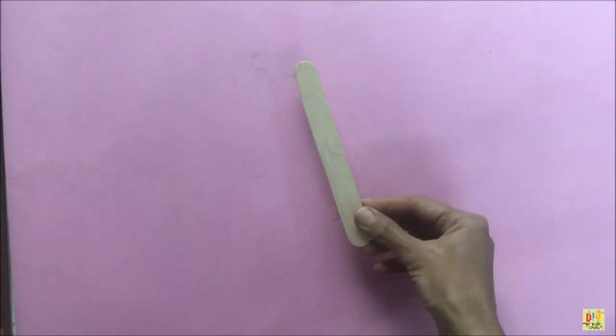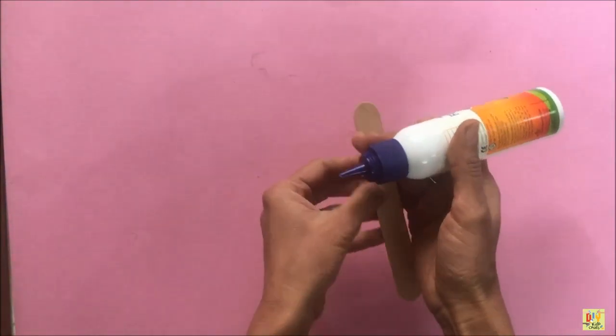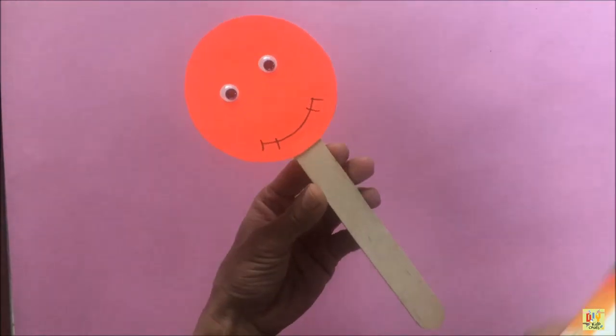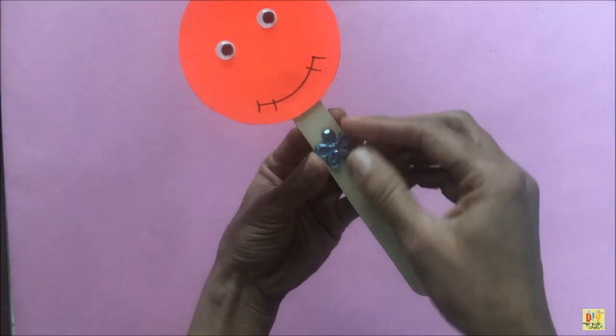Now, get a popsicle stick. This will serve as the body of our animal on a stick. Apply glue on top of the stick and place the head of the animal we made a while ago.